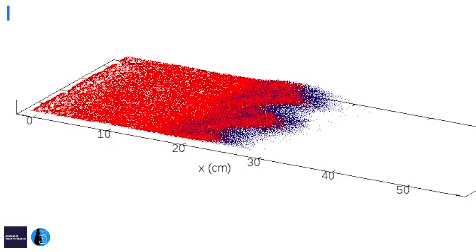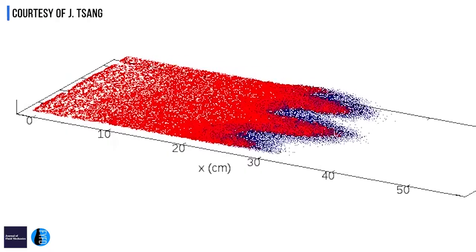The smaller red particles in this case push through and form fingers, and that's the granular fingering instability.